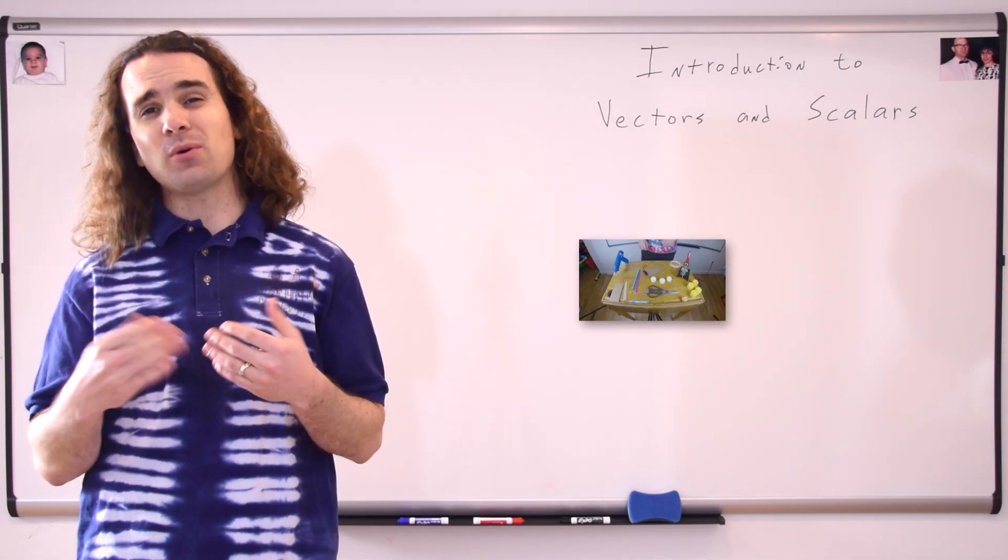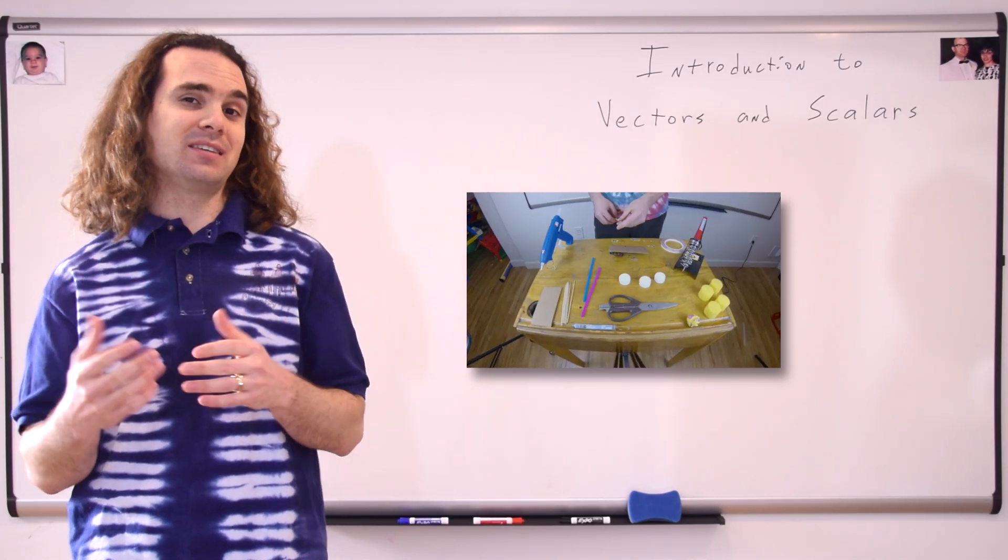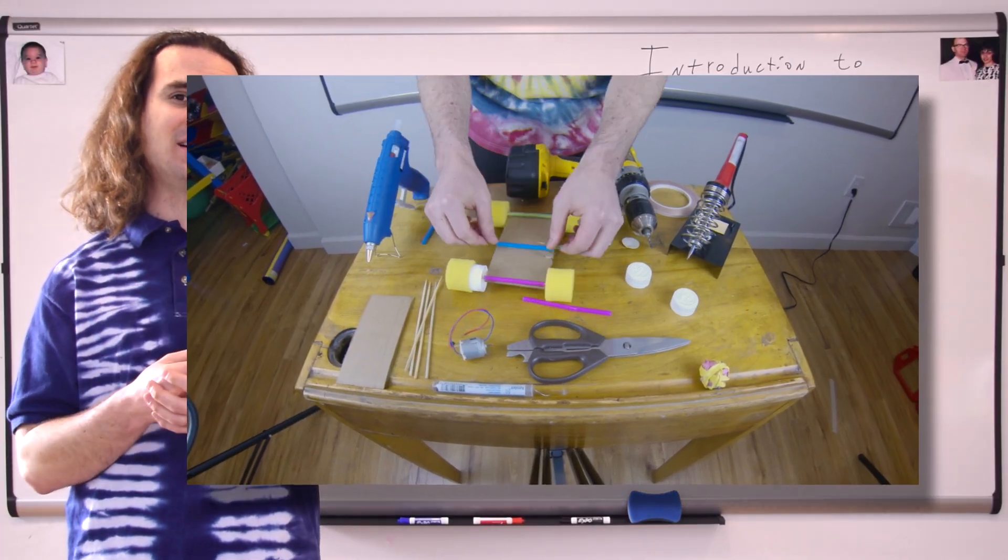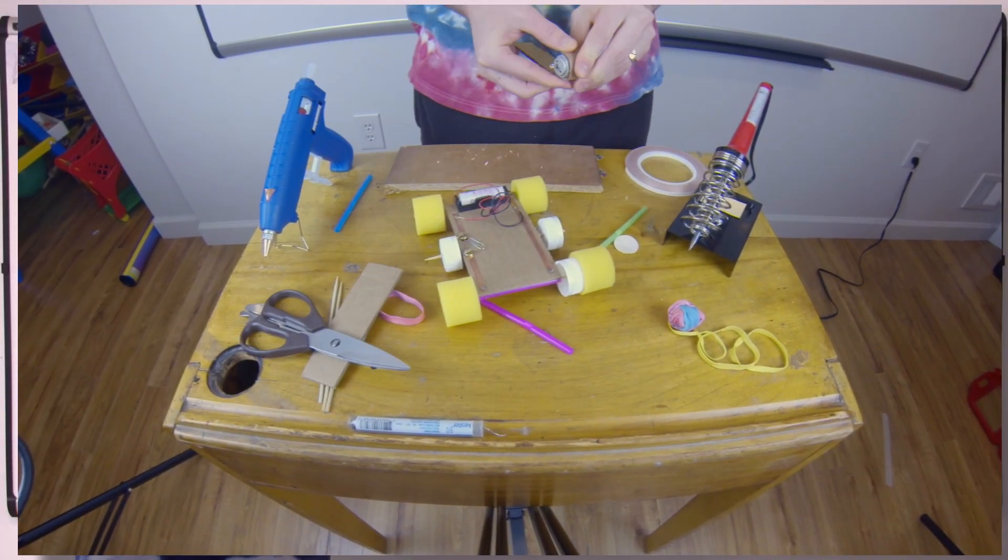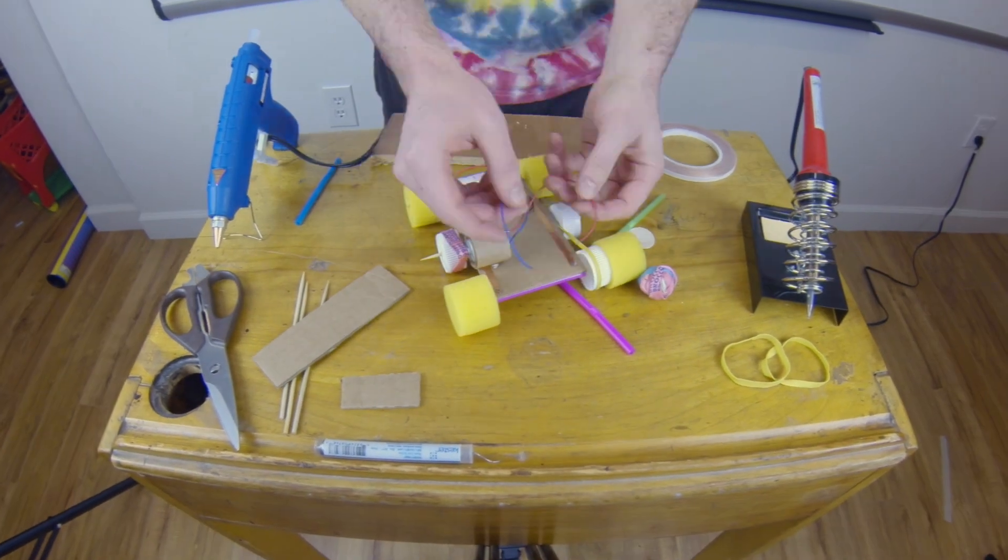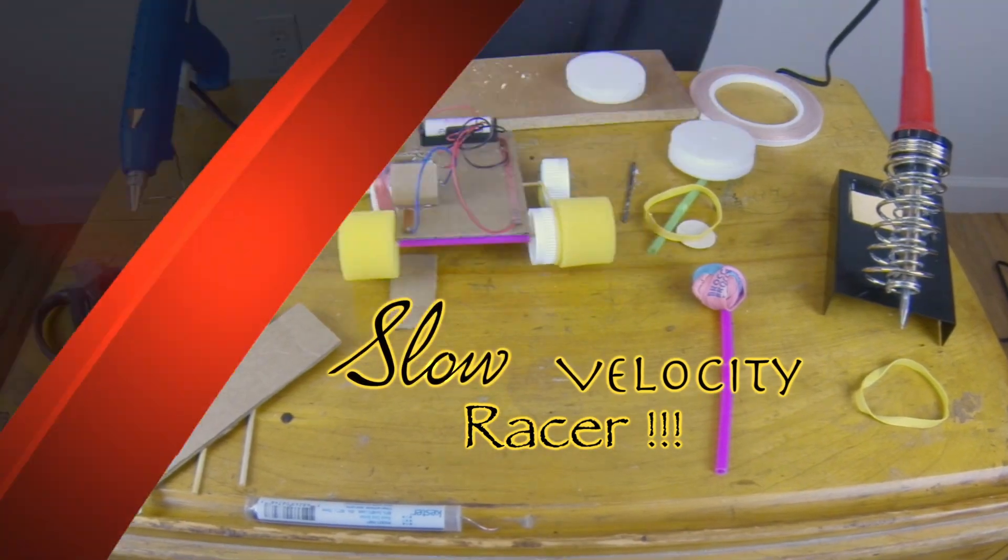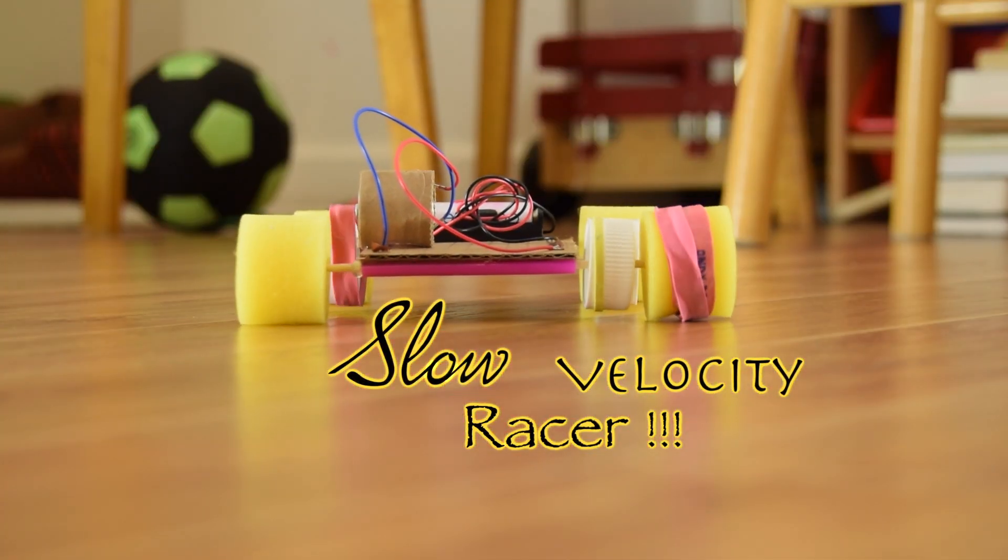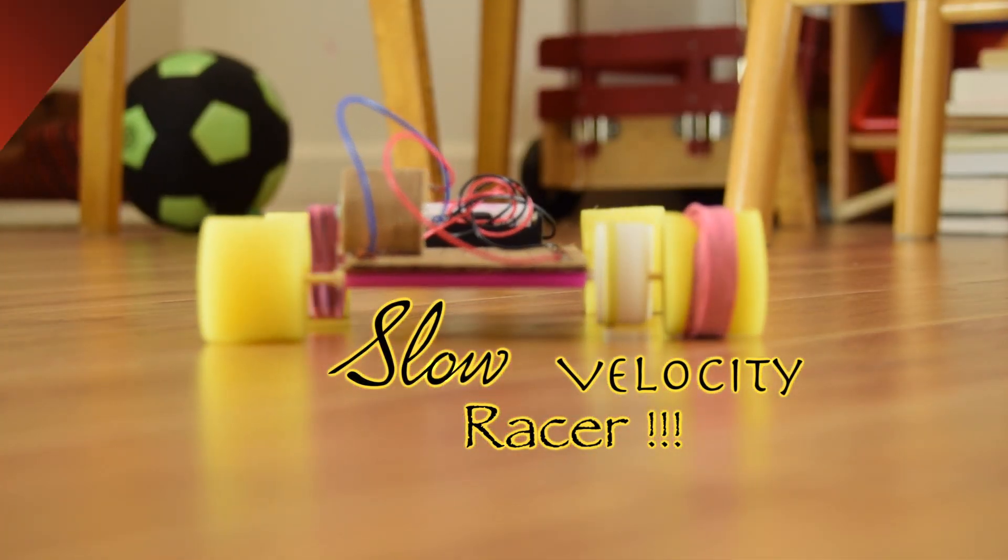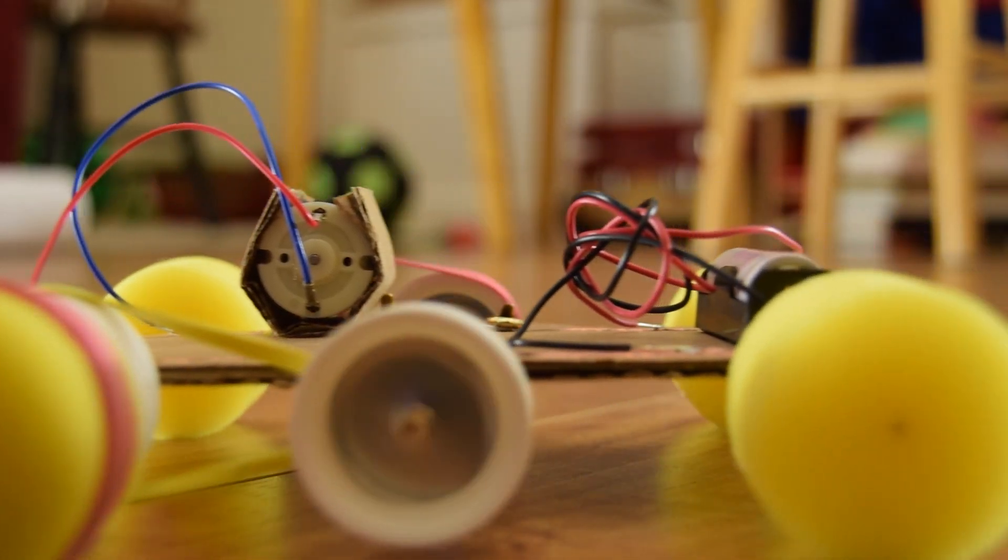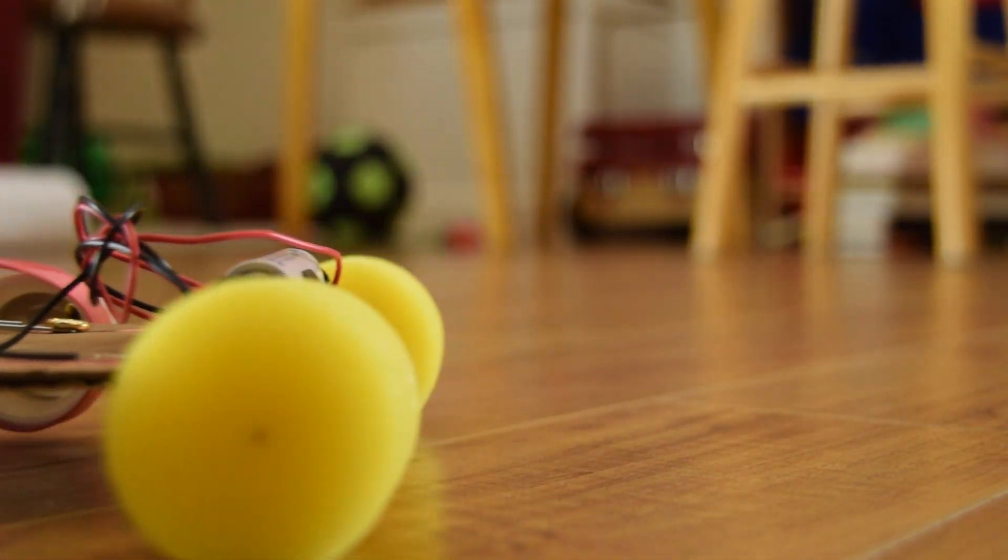As an introduction to vectors and scalars, I want to walk through a rather simple example. In order to do so, I need something that moves at a rather slow, constant velocity. And I actually had a really hard time finding something that would do this. So, I made a race car. I made a slow velocity racer. Really?